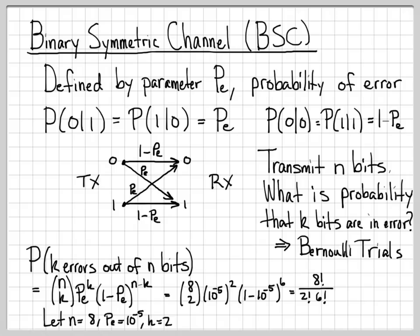So I can write that out. 8 choose 2 is 8 factorial over 2 factorial times the difference of 8 and 2. 8 minus 2 is 6, so that's 6 factorial. 10 to the negative 5th squared is 10 to the negative 10, and then 1 minus 10 to the negative 5th to the 6th. So if I plug this into my calculator, I get a number that is approximately 2.8 times 10 to the negative 9.